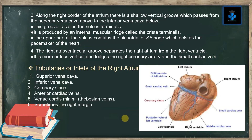The tributaries or inlets of the right atrium include: the superior vena cava, the inferior vena cava, the coronary sinus, anterior cardiac veins, the venae cordis minimae (also known as the Thebesian veins), and sometimes veins from the right margin.